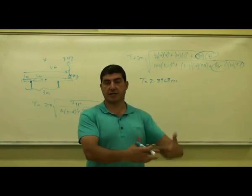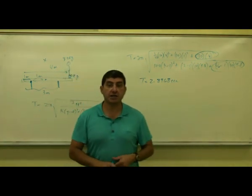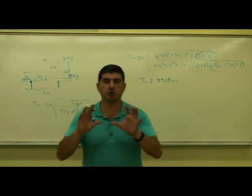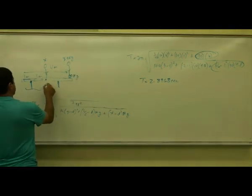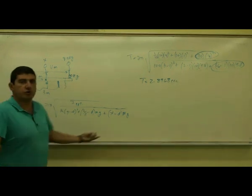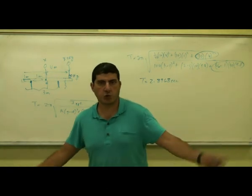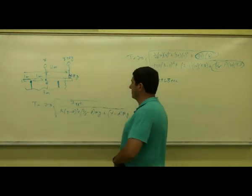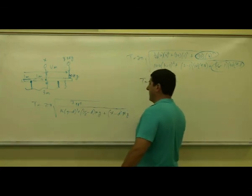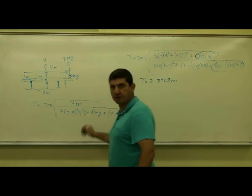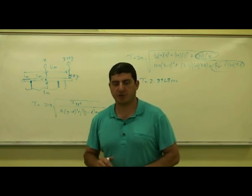From this problem you can see how to approach any situation like this: a pivoted rod, a spring attached, additional masses on top — how to identify simple harmonic motion, find the new omega, and find the period. Once you know the technique, you can add more people, more springs, and make it as complex as you like. You simply add each object's moment of inertia to the numerator and its restoring torque to the denominator. Thank you very much, bye.